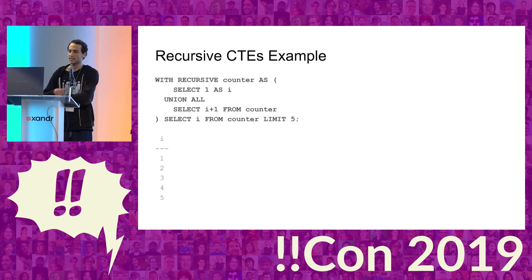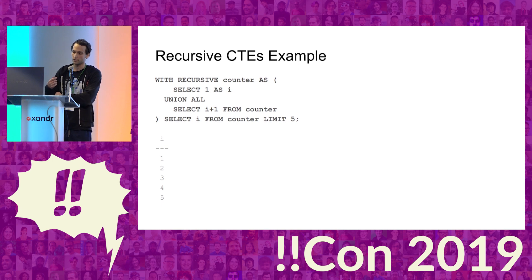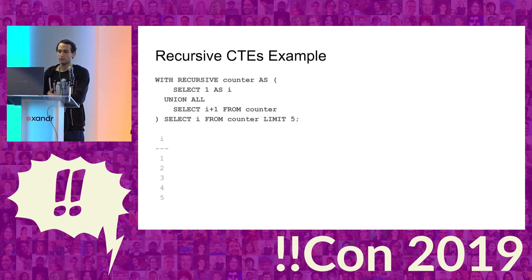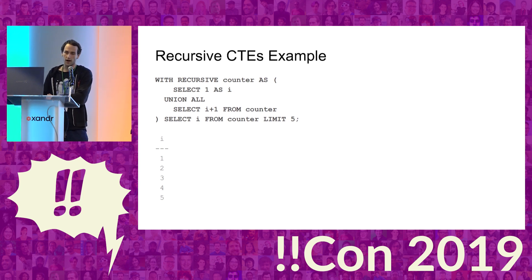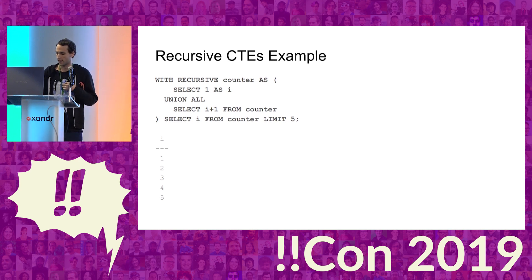As an example, we can use this to implement a counter. For our initial query, we do SELECT 1, which gives us the value one. Then for our recursive query, we SELECT i + 1, giving us two, three, four, five, and so on. This would continue indefinitely, but we're only asking for the first five values, so Postgres evaluates lazily and returns one through five, then terminates.